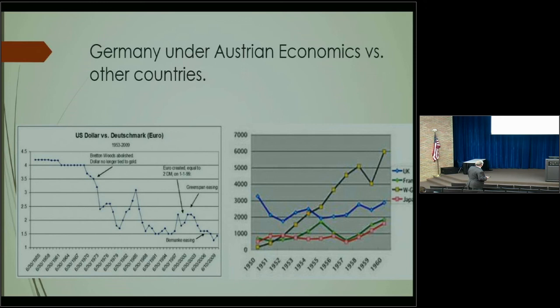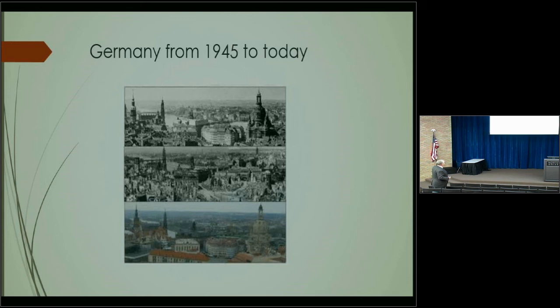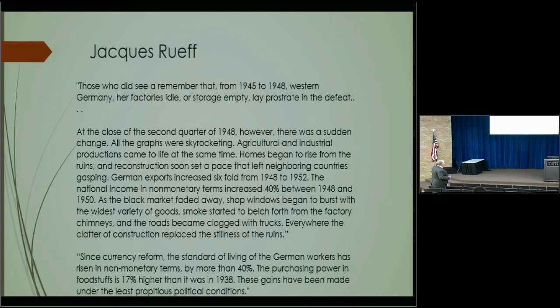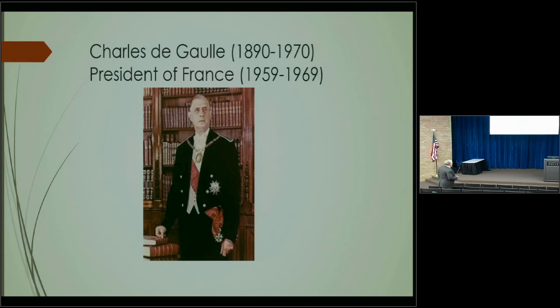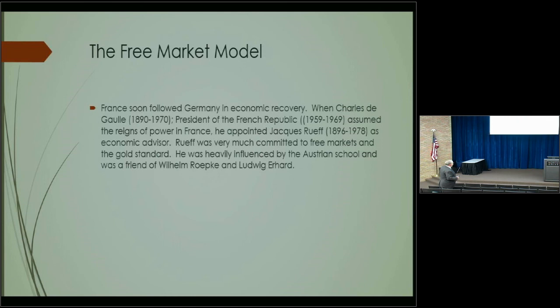Jacques Rueff, the French economist and member of the Austrian school, revitalized France under Charles de Gaulle. He put Rueff in charge — France followed the German recovery. The French economic boom started in 1959 and lasted until about 1968, until de Gaulle left office. The socialists then took over and France has been a basket case ever since.